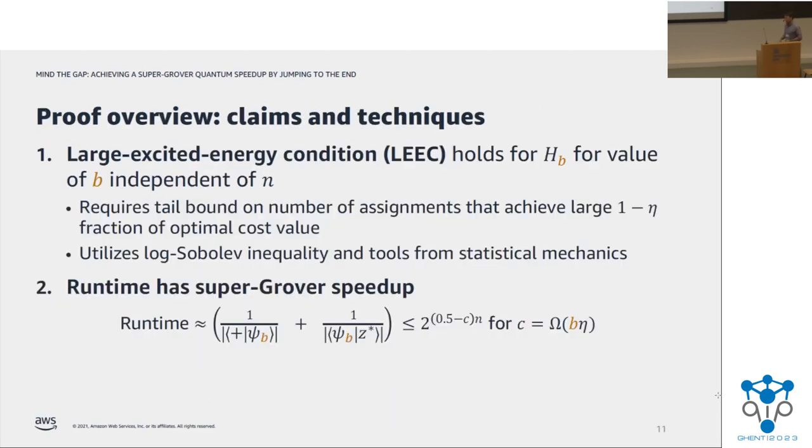Okay, so in the remaining time, I'd like to give a brief proof overview. And unfortunately, I won't have time to give too many details, but I will say that the proof has two main independent components. The first component is proving this large, excited energy condition that guarantees that phase estimation will be able to resolve the two energy levels after the first jump. Here, the tools that we need are first an analysis of the specific cost function. We have to analyze its spectral density, which can be proved in many cases, such as the ones in the table that I showed. And secondly, we use the log-Sobolev inequality, which is an idea that we got from Hastings' work on the short path algorithm, as well as some ideas from statistical mechanics to finish this proof.